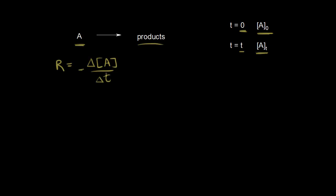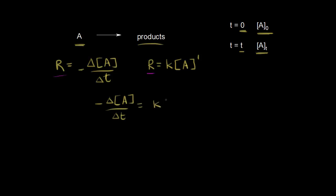We put a negative sign in here to give us a positive value for the rate. We can also write out the rate law: the rate is equal to the rate constant K times the concentration of A, and since this is a first order reaction, this would be to the first power. Since they're both equal to the rate, we can say that the negative change in the concentration of A over the change in time is equal to K times the concentration of A to the first power.